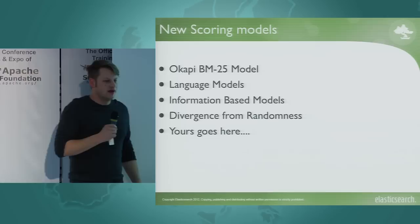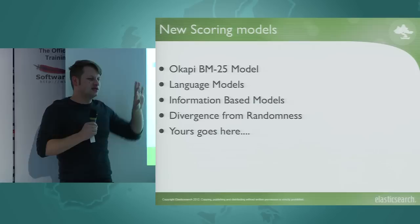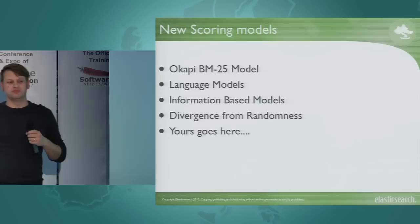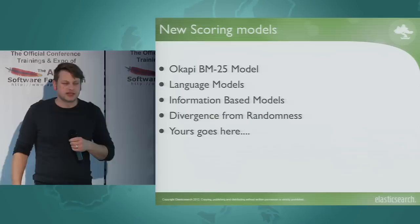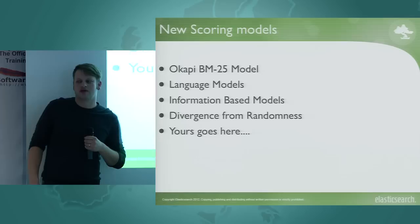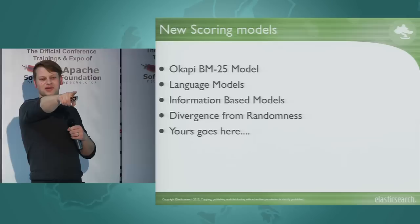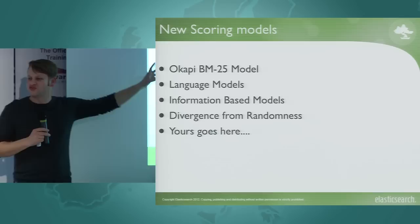By default we have Okapi BM25, certain language models, information-based models, and divergence from randomness - and another one coming that's the first to need more than two values in the norms table. Especially if you work with short documents, Okapi BM25 might be slightly slower execution-wise but the results look much better. So if you're moving to Lucene 4, consider looking at what we can offer scoring-wise rather than blindly sticking with TF-IDF.